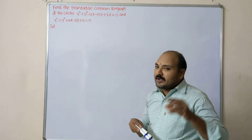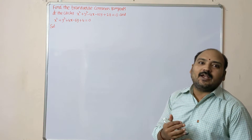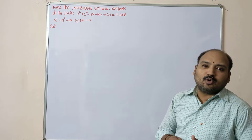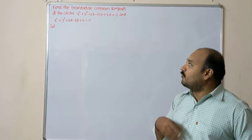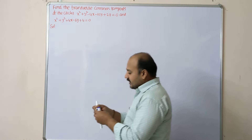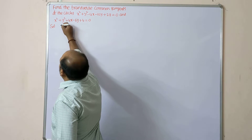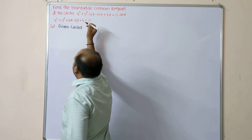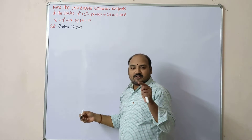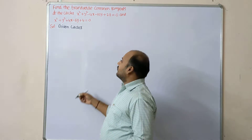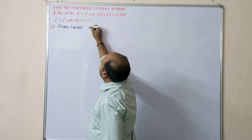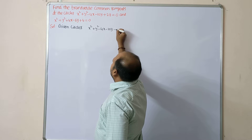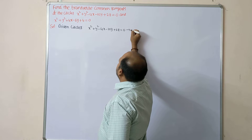To find the transverse common tangent we need to calculate the internal center of similitude. Proper steps are required — nowadays most students are missing the steps in the board of intermediate exams, it is very much required. Given circles: x² + y² - 4x - 10y + 28 = 0, keep it as equation number one.